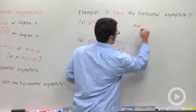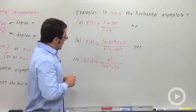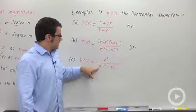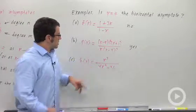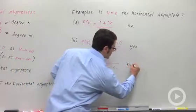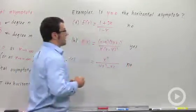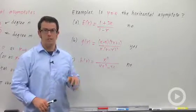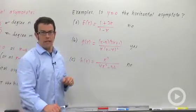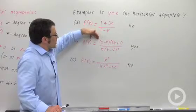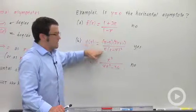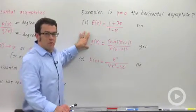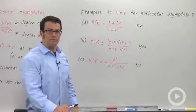Put no here for the third example, where the degree of the numerator is bigger than the degree of the denominator. So no — y equals 0 is not the horizontal asymptote. So again, the only time y equals 0 is the horizontal asymptote is when the degree of the numerator is less than the degree of the denominator, and g of x is the only example here that has that property.